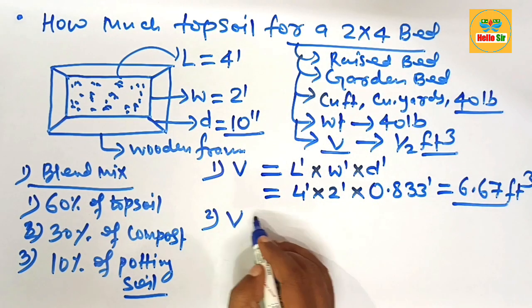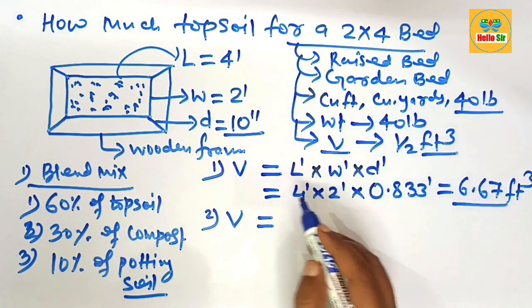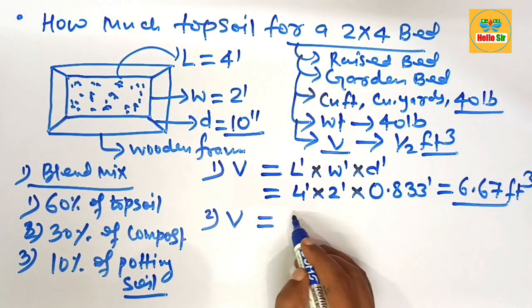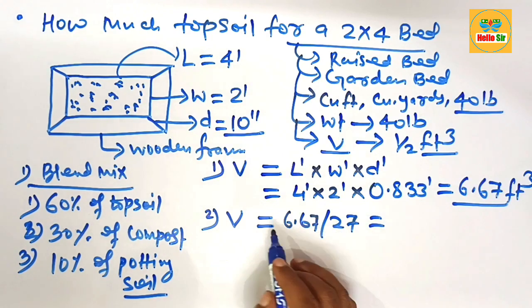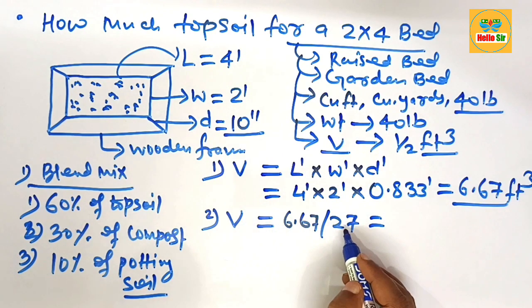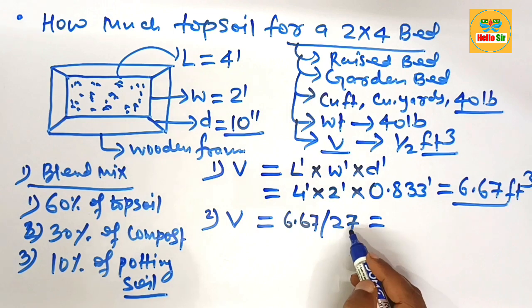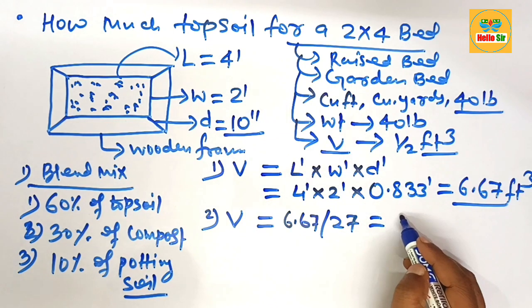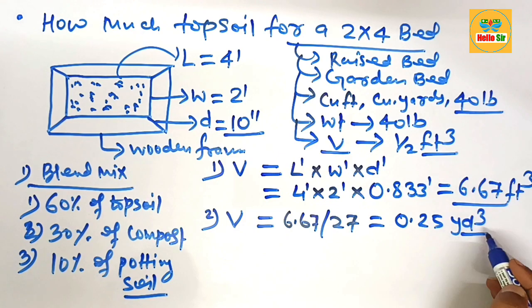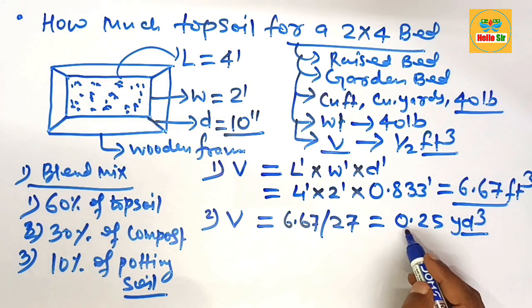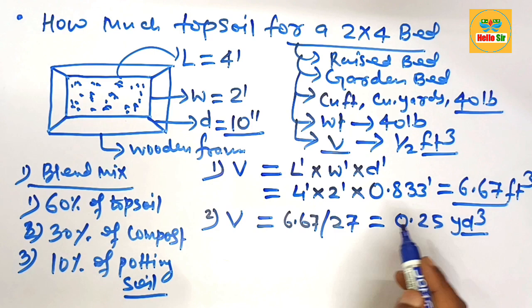If you want to calculate the volume of topsoil in cubic yards, then you divide this cubic foot by 27, because 1 cubic yard volume equals 27 cubic feet. This will come to about 0.25 cubic yards. It means you need approximately 0.25 cubic yards of topsoil.